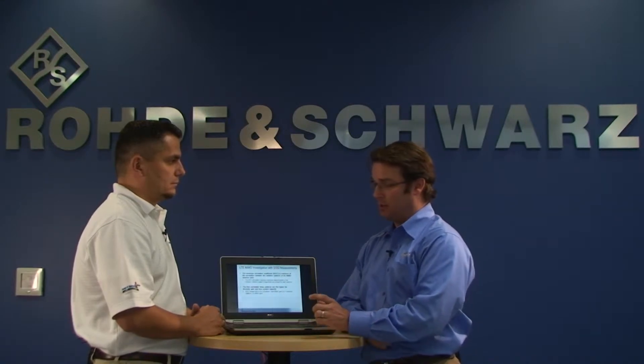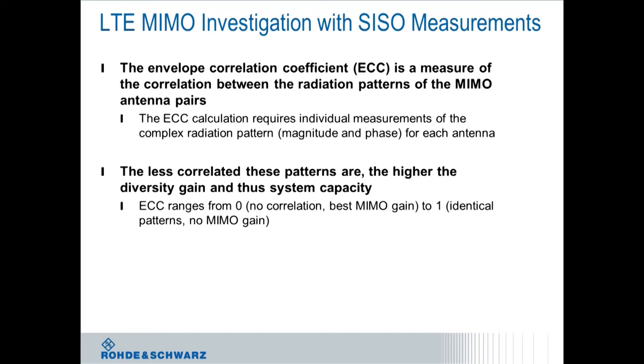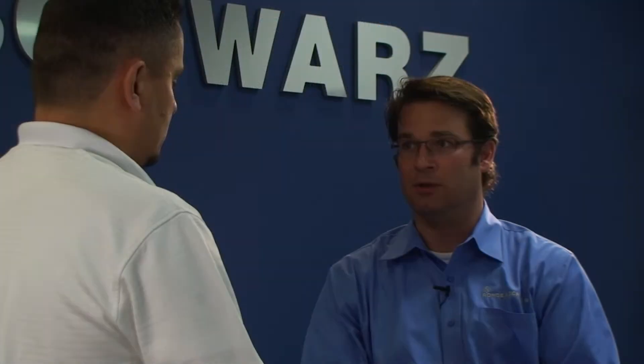In order to determine the ECC value using a rather complex equation, you need to determine the complex radiation patterns radiated by each of the antennas. The range goes from zero to one: zero being the best MIMO gain for the device under test because the antennas are completely uncorrelated. ECC of one means no MIMO gain at all and the antennas are completely correlated. So the target would definitely be to design a system with an ECC value of zero, or as close as possible.